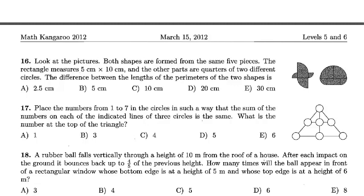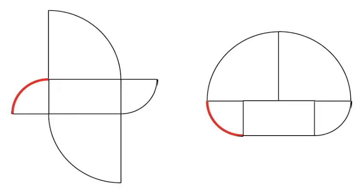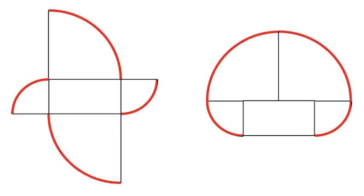Let's mark in red the segments on each shape that are common to both shapes. First, let's eliminate the segments of the circles, or rather the circumference of the circles, with a smaller radius. Then the segments of the circle with a larger radius. Finally, let's eliminate the straight line segments.